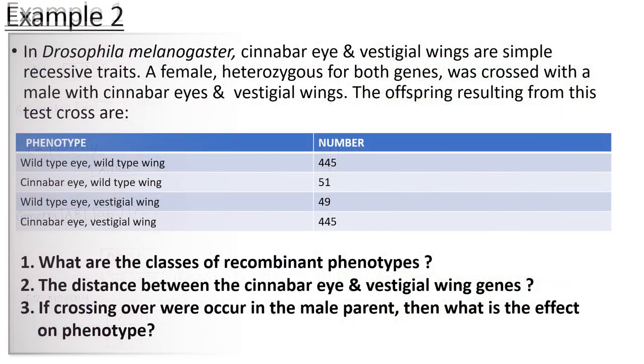Moving to the next example. In Drosophila melanogaster, cinnabar eye and vestigial wings are simple recessive traits. A female heterozygous for both genes was crossed with a male with cinnabar eyes and vestigial wings. The offspring resulting from this test cross are these. Cinnabar eye is a sex-linked recessive characteristic in Drosophila. And vestigial means vestigial organs - vestigial is somewhat very small or degenerative, not completely grown. This is the offspring result from this cross. Phenotypes are like this and the numbers are this. This is the data we have.